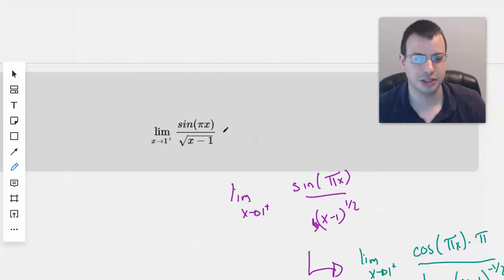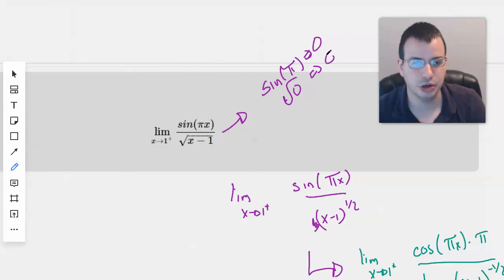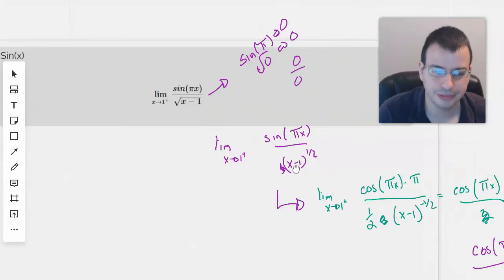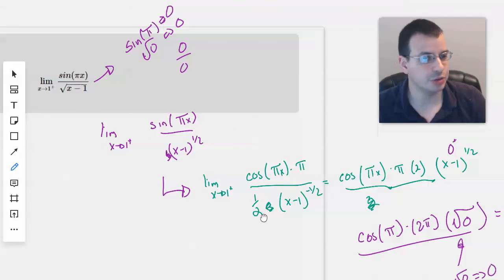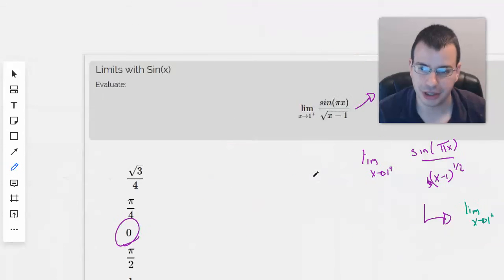So for this, to backtrack slightly, you plug in 1 here, you get sine of pi, which is 0. And then on the bottom, you get square root of 0, which is also 0. And you have your 0 over 0 indeterminate form. And that's how we determine what the actual answer is, was through L'Hopital's Rule.